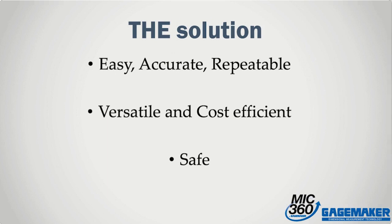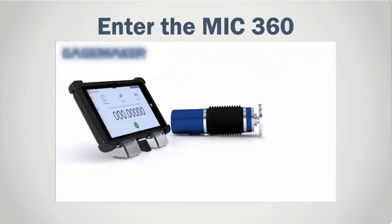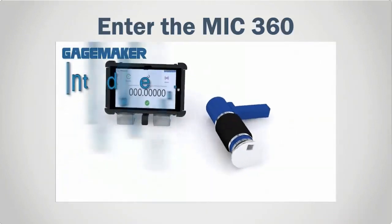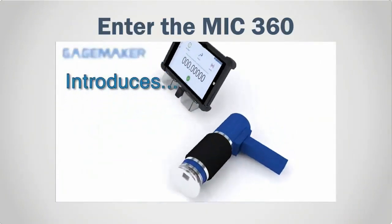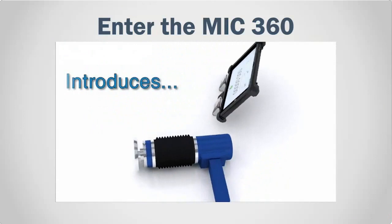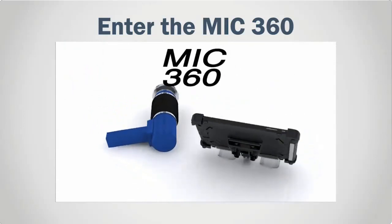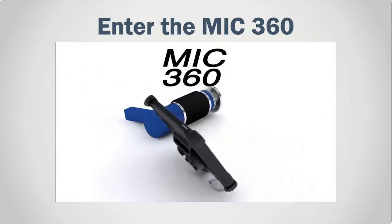Foremost, the instrument needs to be accurate, without question. It needs to be easy to use, regardless of the operator or machine tool involved, and it needs to be versatile enough to measure a vast range of sizes to stay economical. Enter the GageMaker MIC360, a complete, in-process, large diameter measuring system.